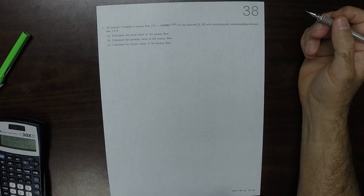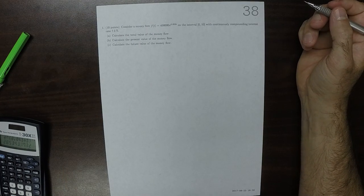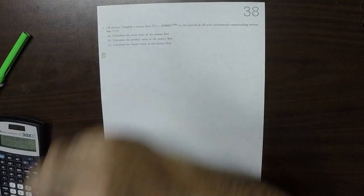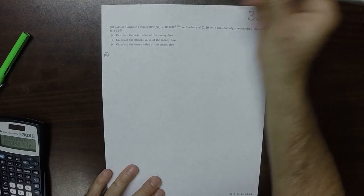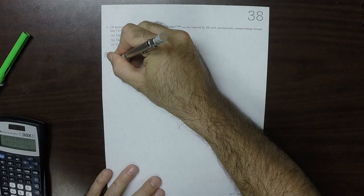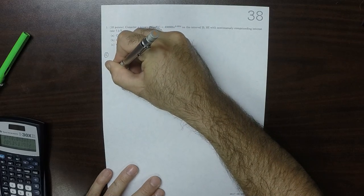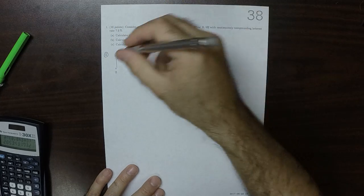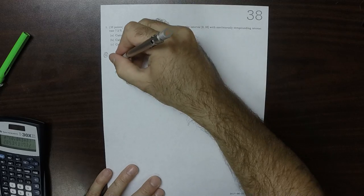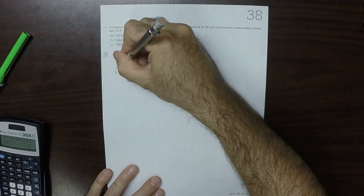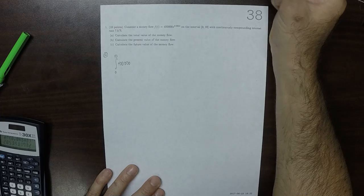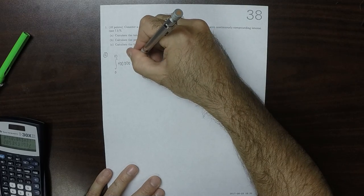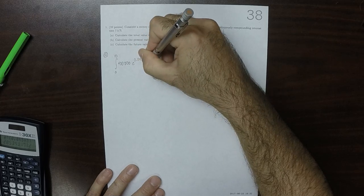This is the solution to written homework 38. For part A, the total value of the money flow is integral 0 to 10, and then the money flow. So that's 400,000 exponential 0.055t dt.